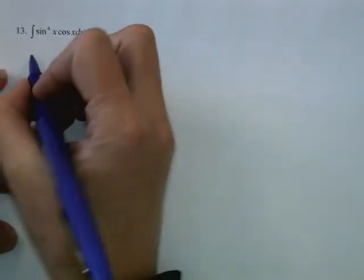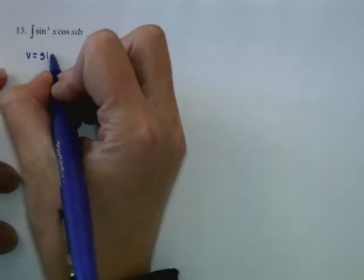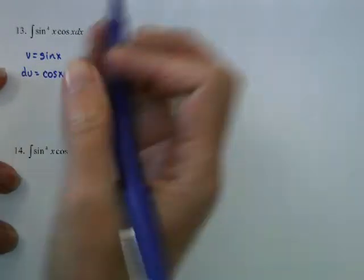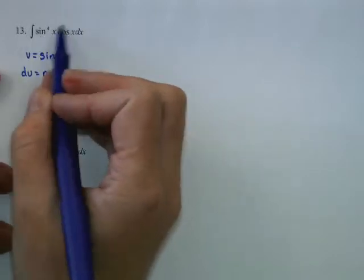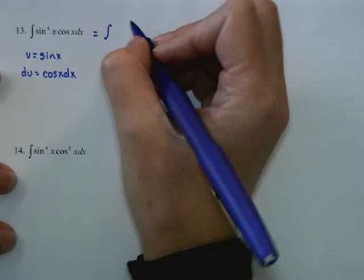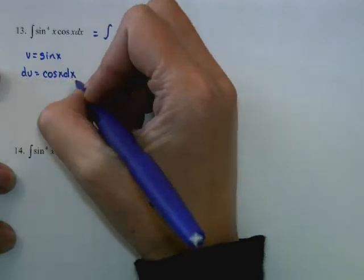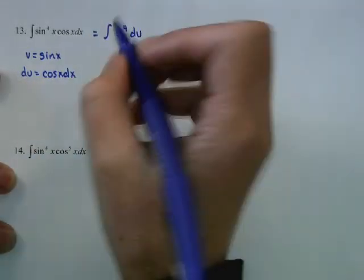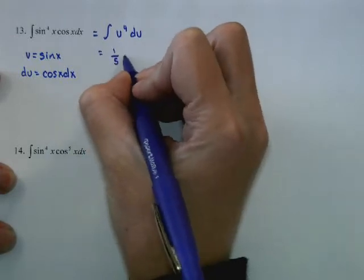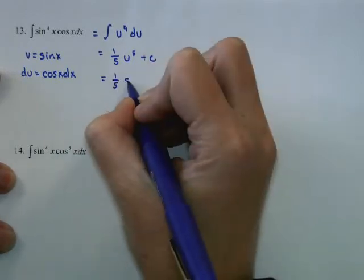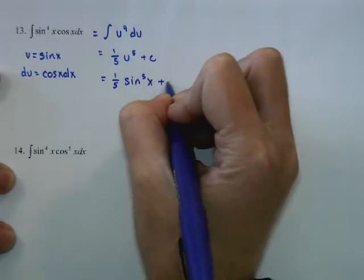Now for a U-substitution example: the integral of sine to the fourth x times cosine x. Let u equal sine of x, so du equals cosine x dx. I pick sine of x because it's the inside function and its derivative is present. The integral becomes u to the fourth du, which gives one fifth u to the fifth plus C, or one fifth sine to the fifth x plus C.